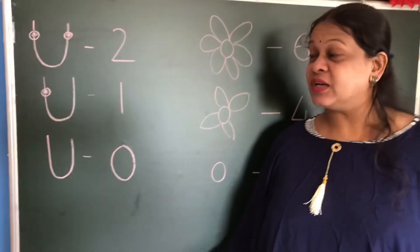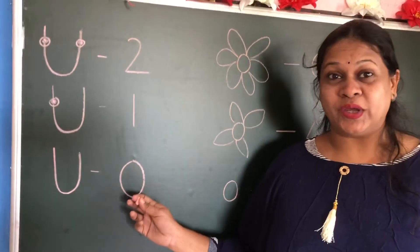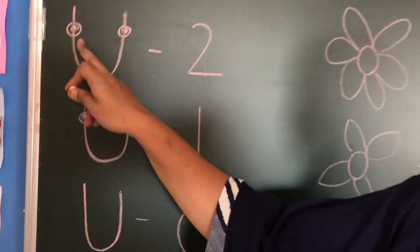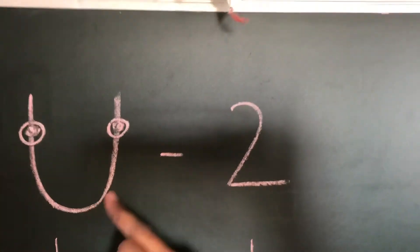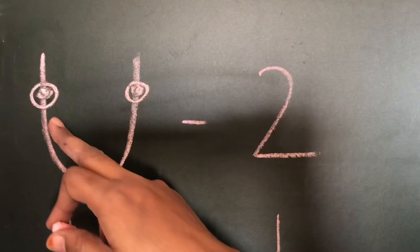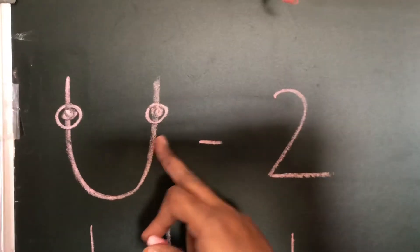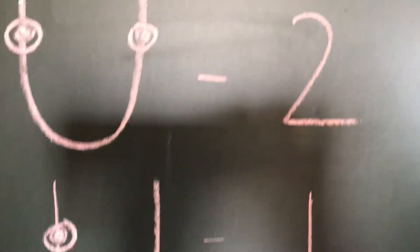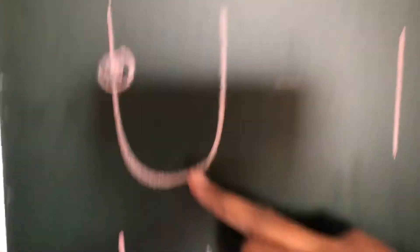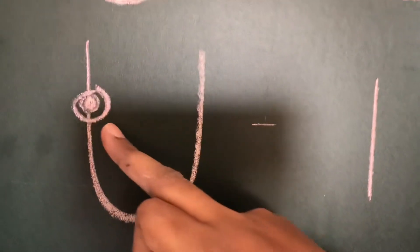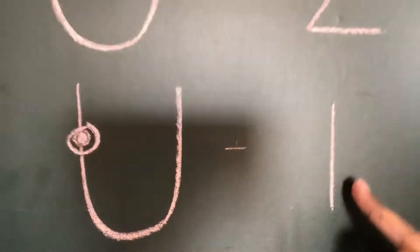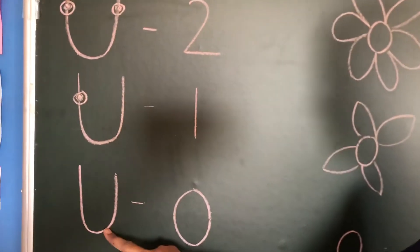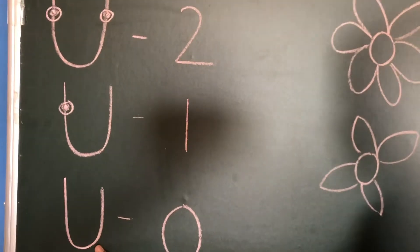Today you are going to learn something exciting. See, what is this? This is a string. How many beads are there? One and two — there are two. Now this is the next string. How many beads are there? Only one. I've written one here. Now what is this? This is a string — it doesn't have any beads.